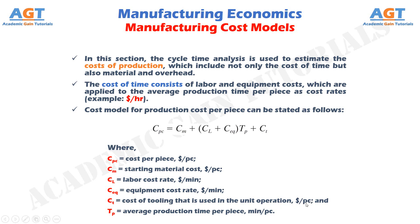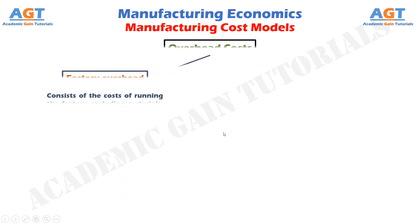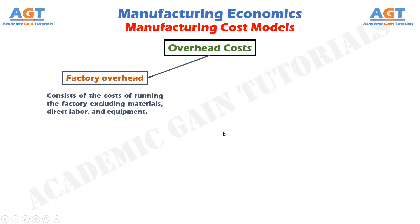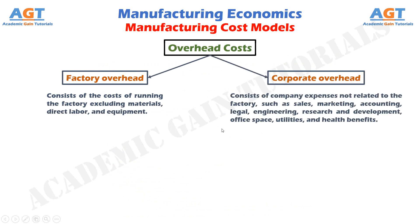The two cost rates, CL and CEQ, include overhead costs, which consist of all of the expenses of operating the company other than material, labor, and equipment. Overhead costs can be divided into two categories: factory overhead and corporate overhead.